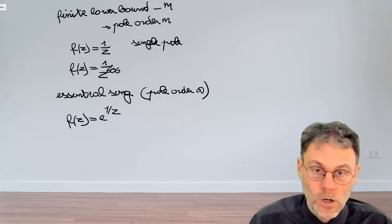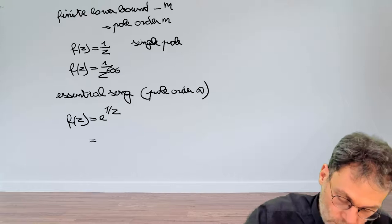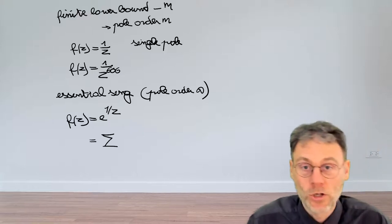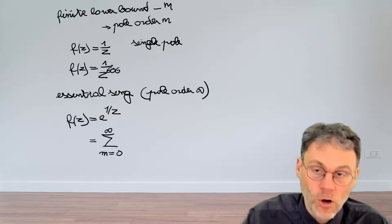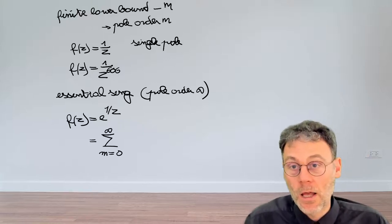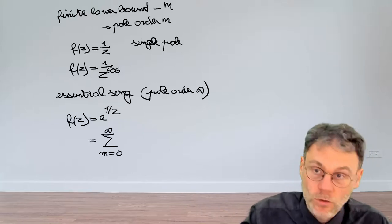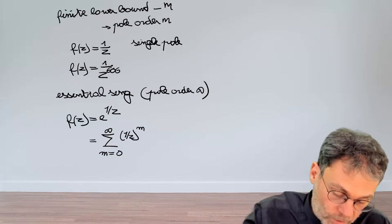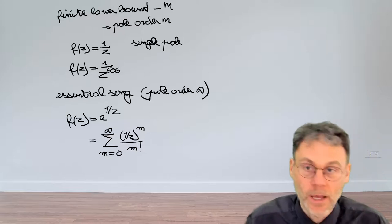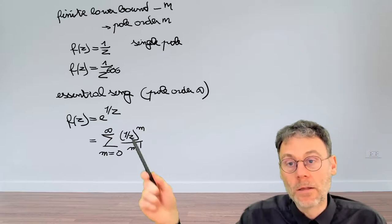Writing down that Laurent series is not so hard. We just use the definition of the series expansion of the exponential, which is a sum of m going from 0 to infinity, the argument of our exponential to the power of m. So in our case, that's 1 over z to the power of m, and then we divide by m factorial.